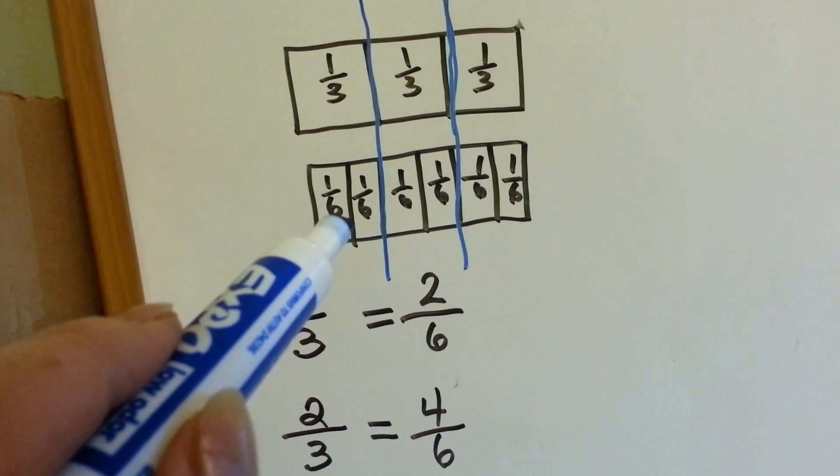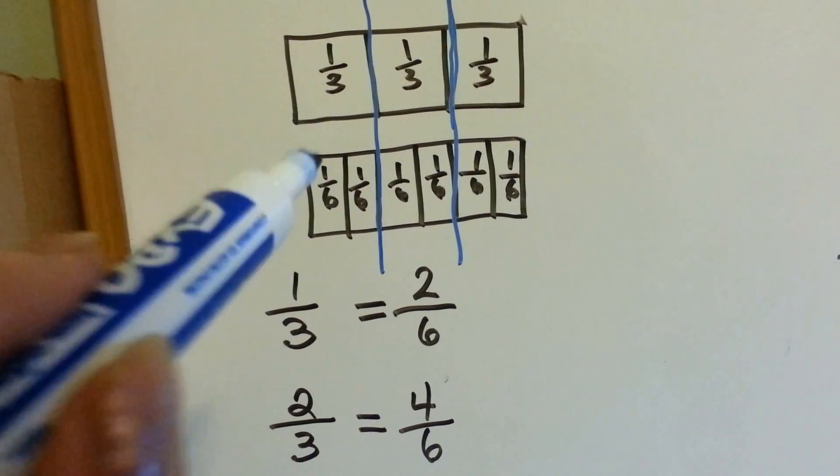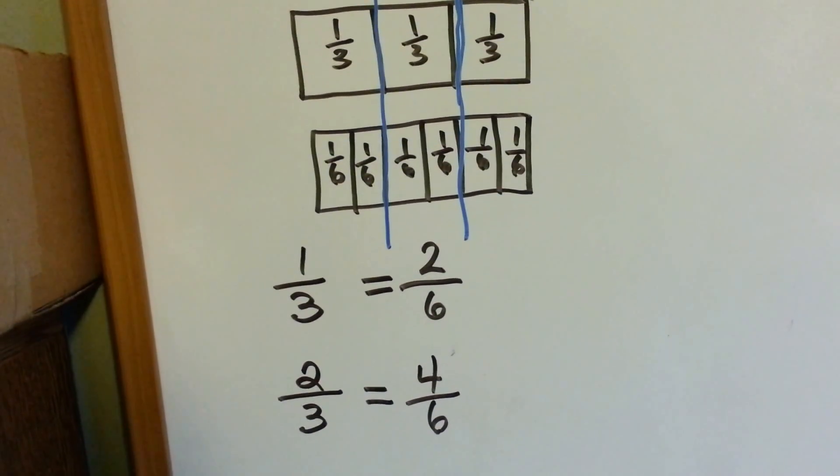If this was a candy bar and this was a candy bar, and I said I was going to give you a third of this one and two sixths of this one, then I was giving you the same amount. I was being fair.